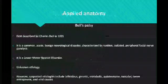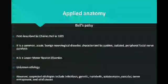Coming to the applied anatomy: first is Bell's palsy, first described by Charles Bell in 1821. It is a common, acute, benign neurological disorder characterized by sudden isolated peripheral facial nerve paralysis. It is a lower motor neuron disorder. The etiology is unknown, but suspected causes include infection, genetic factors, autoimmune disorders, nerve entrapment, and viral causes.